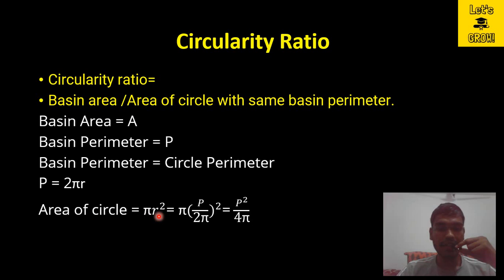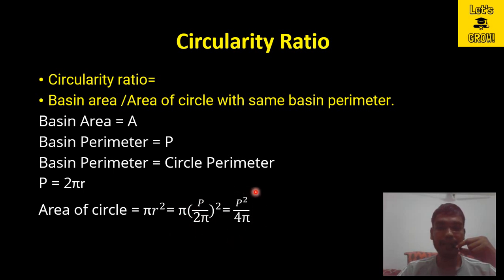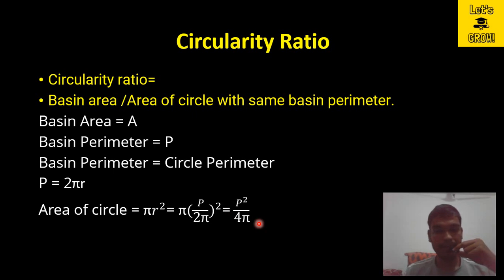The value of r can be determined from the perimeter equation as r = p / (2π). Substituting this value of r into the circle area formula πr² and simplifying, we get p² / (4π). So p² / (4π) is the area of a circle having the same perimeter as the basin.